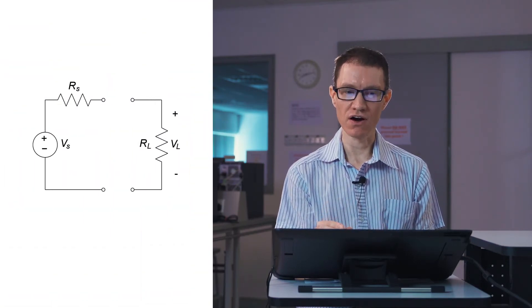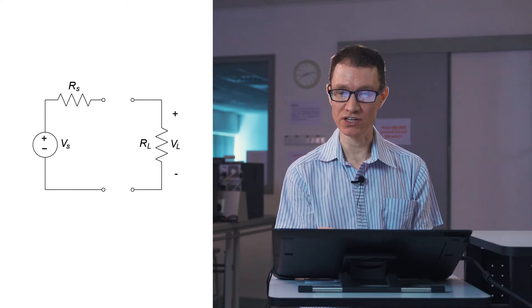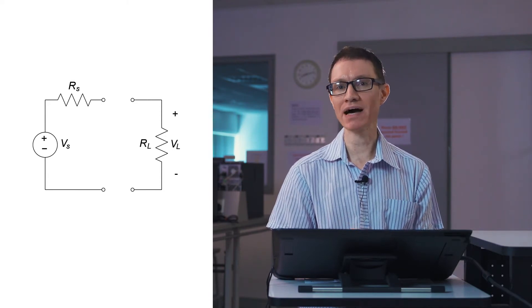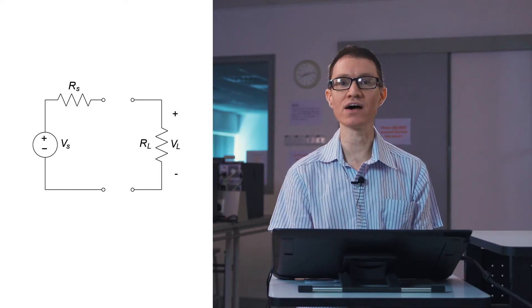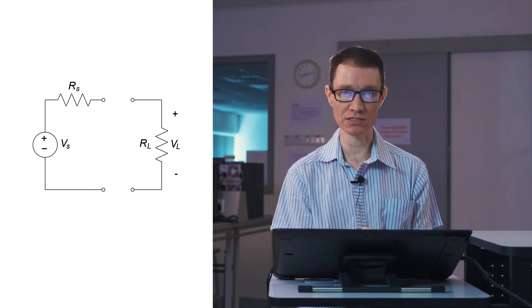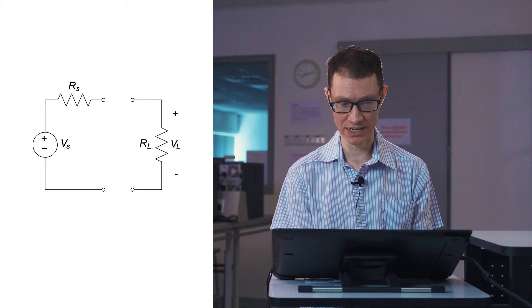Knowing that sources aren't perfect, I now want to ask the following question. What resistance R sub L in this circuit would allow the maximum power to be transferred from the source to the load? That's what we're going to calculate, given that the source has a particular source resistance of Rs.